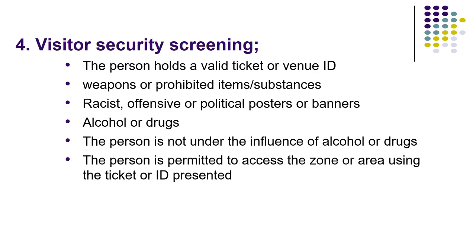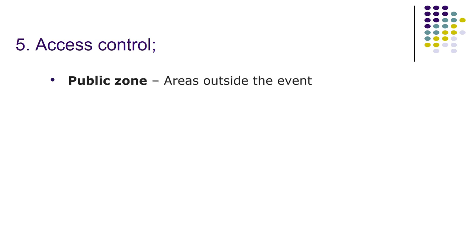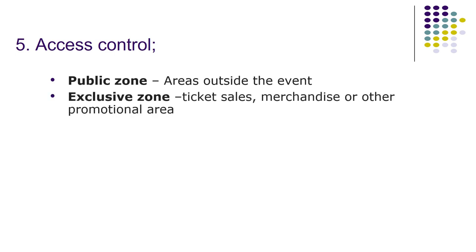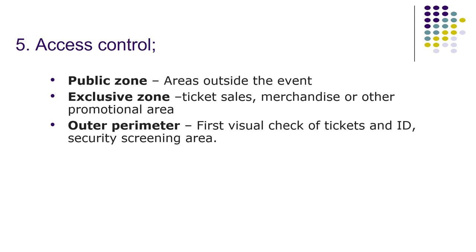Number five: access control. There may be various types of access zones and you have to control the movement of people and vehicles. The first zone is the public zone — the area outside the event. The second is the exclusive zone, which includes ticket sales, merchandising, or other promotional areas. The outer perimeter is where the security guard performs the first visual check of tickets and IDs and carries out security screening.